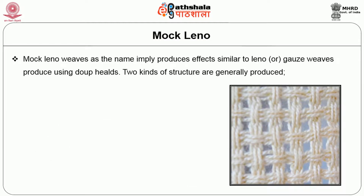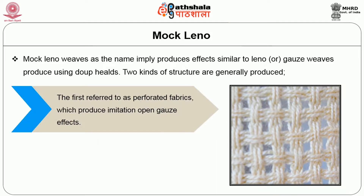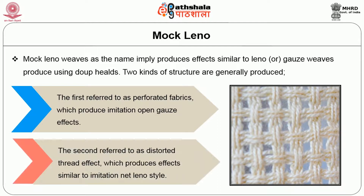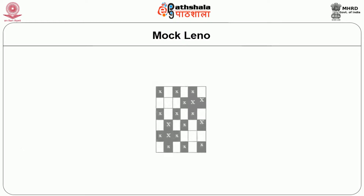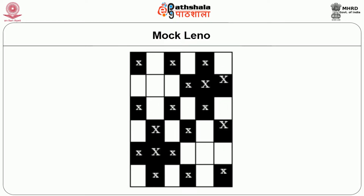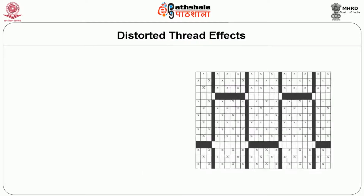Mock lino is the next fancy weave. Mock lino weaves, as the name implies, produce effects similar to lino or gauze weaves produced using dope peels. Two kinds of structures are generally produced: the first, referred to as the perforated fabric, produces an imitation open gauze effect; the second is the distorted thread effect, which produces effects similar to imitation net lino style. The perforated fabric mock lino weave producing imitation gauze effect is illustrated in figure 2.1, constructed by reversing a small 3-by-3 unit, repeating on 6 ends and 6 picks.